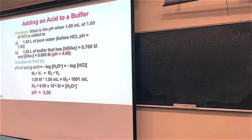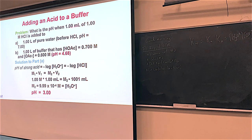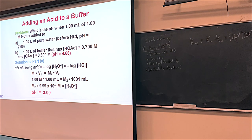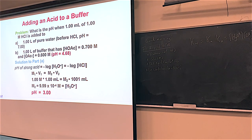Strong acids and strong bases — nothing to mess around with. Today in lab you're going to use 12 molar HCl. This is 1 molar HCl, and it drops pH like it's going out of style — 12 molar is the big brother. When you're using the 12 molar HCl, please be very careful. I recommend wearing goggles. So 1 milliliter of HCl to a liter of water dropped the pH from 7 to 3.